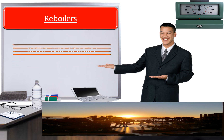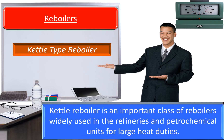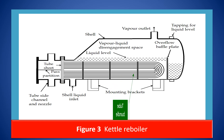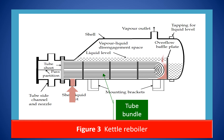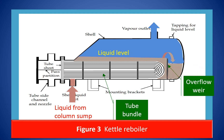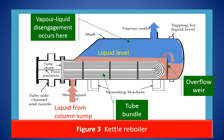Kettle type reboilers are an important class of reboilers widely used in refineries and petrochemical units for large heat duties. In a kettle type reboiler, the tube bundle is immersed in a pool of liquid in an oversized vessel. The submergence of the tube bundle is ensured by an overflow weir at a height of roughly 50 to 100 mm above the surface of the topmost tube of the tube bundle. The liquid flows from the column sump to the bottom of the kettle shell, where it is partially vaporized. The vaporized liquid is then separated from the liquid in a vapor disengagement space above the tube bundle.